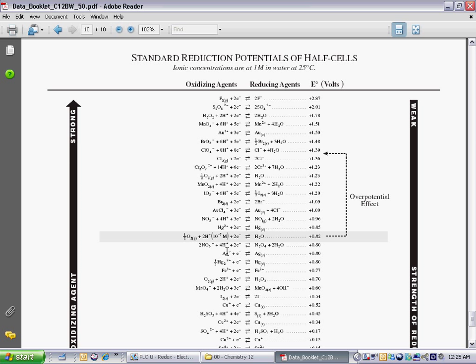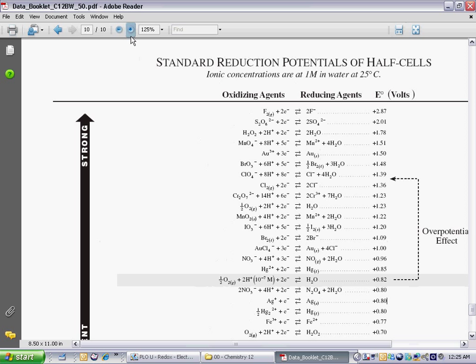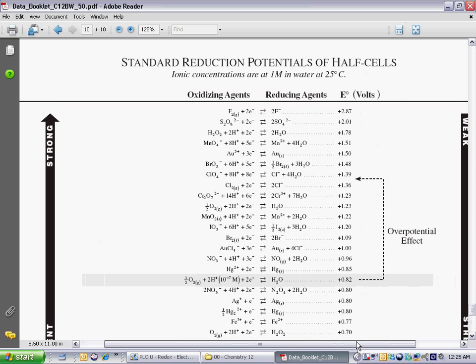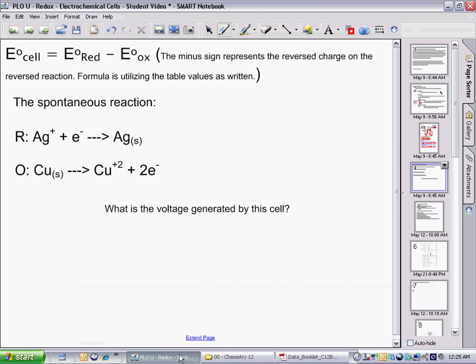If we're looking for that reaction, it's right here. Silver + electrons goes to silver solid, that is +0.8. So this reaction, 0.80 volts.